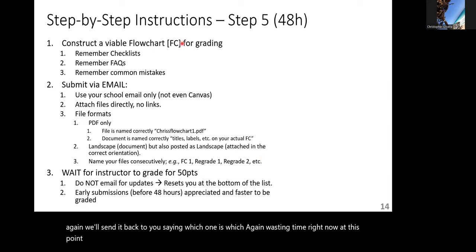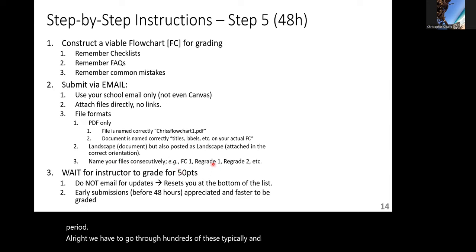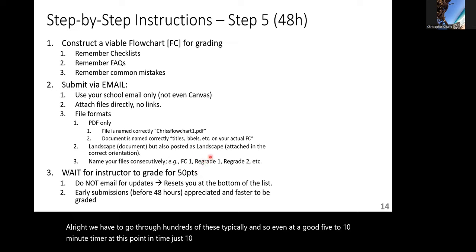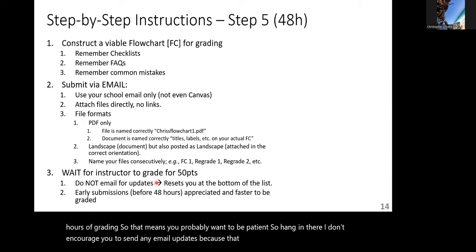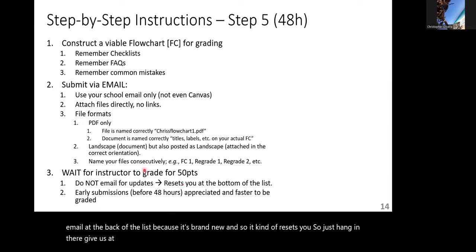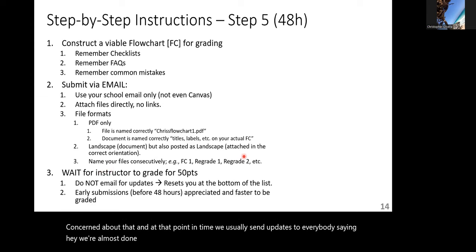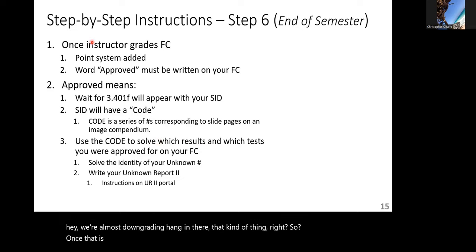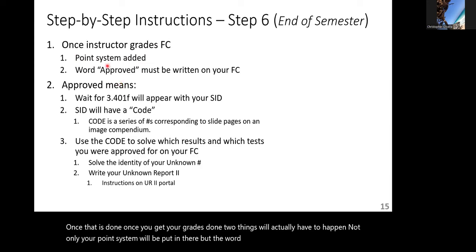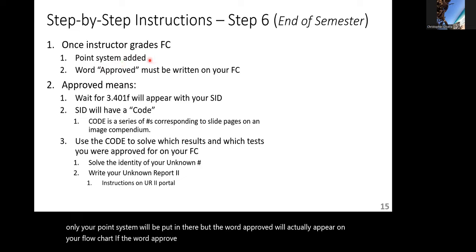Once you submit, there's a waiting period — grading hundreds of files at 5–10 minutes each adds up to hours. Give us at least 48 hours before becoming concerned, and don't send email updates as that pushes your email to the back of the queue. When graded, your point score will be posted and the word 'approved' will appear on your flowchart. If 'approved' doesn't appear, you cannot start your tests.